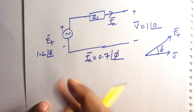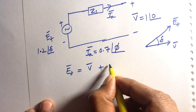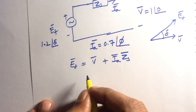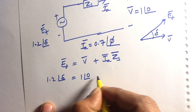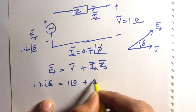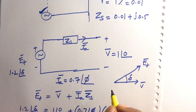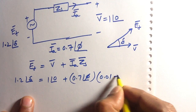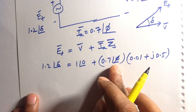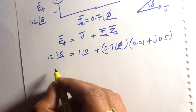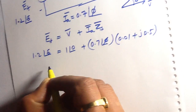Applying KVL, we can write: E_F = V + I_A · Z_S. Substituting the values: 1.2∠δ = 1∠0° + (0.7∠φ)(0.01 + j0.5). The synchronous impedance Z_S = 0.01 + j0.5 per unit. From this equation we have to calculate the value of φ.